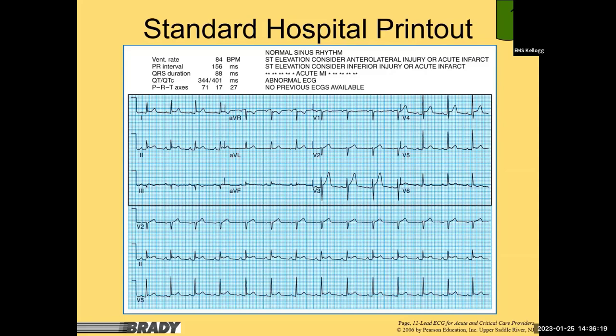There's a lot of numerical data on the printout. Ventricular rate: 84 beats per minute. PR interval: no more counting small boxes — it says 156 milliseconds, which equals 0.156 seconds. We're used to working with the range 0.12 to 0.20 seconds, so 120 milliseconds to 200 milliseconds. Is 156 ms within normal range? Yes. That's the conversion between milliseconds and seconds.